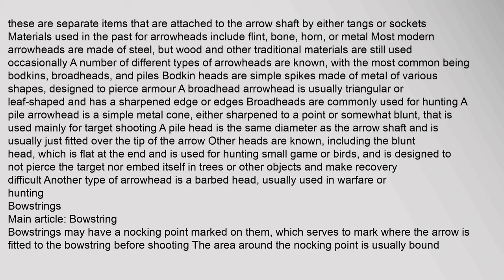A broadhead arrowhead is usually triangular or leaf shaped with a sharpened edge or edges, and is commonly used for hunting. A pile arrowhead is a simple metal cone, either sharpened to a point or somewhat blunt, used mainly for target shooting. A blunt head is flat at the end and is used for hunting small game or birds, designed to not pierce the target nor embed itself in trees. Another type is a barbed head, usually used in warfare or hunting.